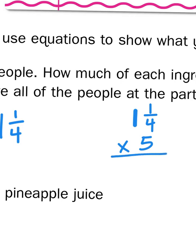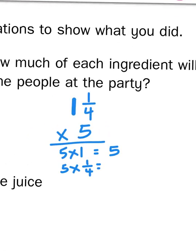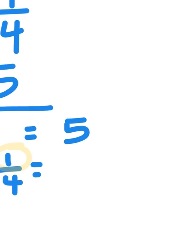So, if I use partial products to solve this problem, I'm going to be multiplying 5 times 1, and then I'm going to be multiplying 5 times 1 fourth, and then adding my products together. Well, 5 times 1 is 5, of course, and then 5 times 1 fourth, I'm going to be multiplying just the numerator. So, what that's going to do is I'm going to get 5 fourths as my fraction.